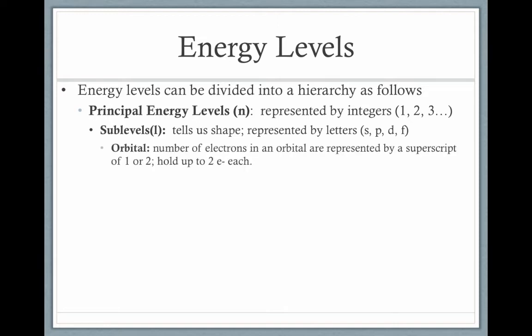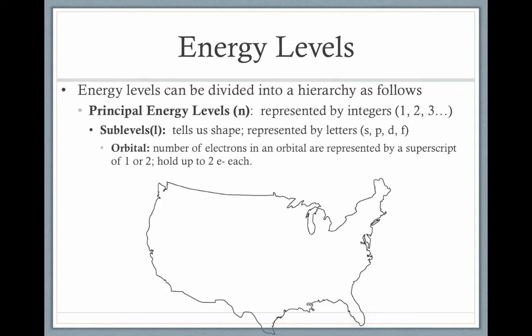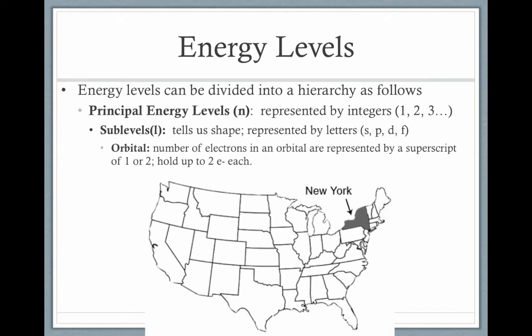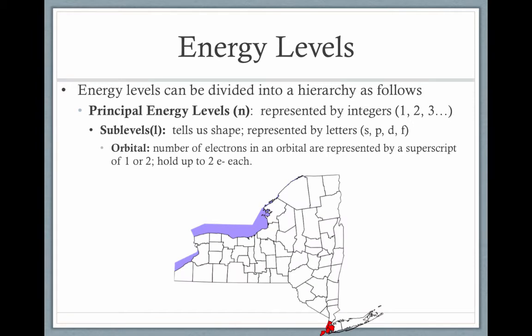Within each sublevel, we have orbitals — the actual areas where the electrons can exist. These orbitals can hold up to two electrons each maximum. A good analogy for this is the United States. If someone asks you where you live, you might say you live in the US — this would be your principal energy level. But we can subdivide this into sublevels or states. So I might say I live in New York, which is in the United States — New York is my sublevel and the United States is my principal energy level. Furthermore, I can subdivide New York State into smaller areas. I might say that I live in New York City, which is in New York State, which is in the United States. Or: I live in the city (the orbital), which is in the state (the sublevel), which is in the country (the principal energy level).